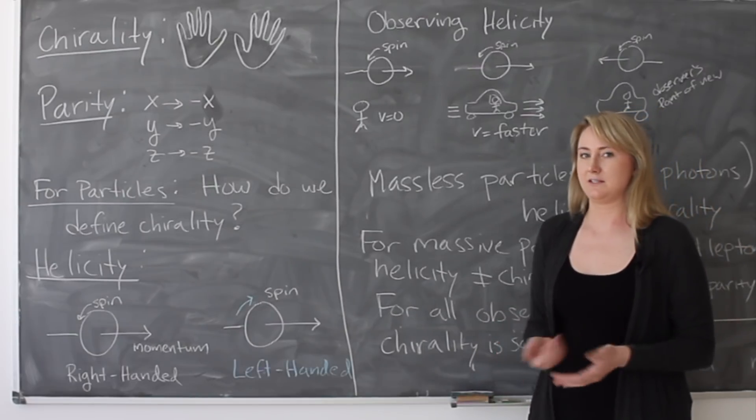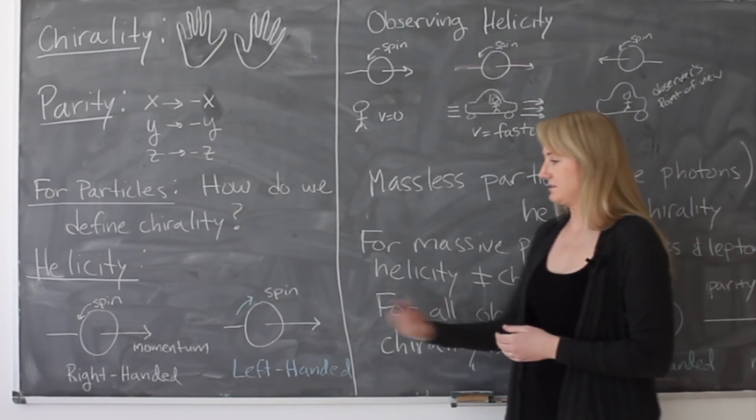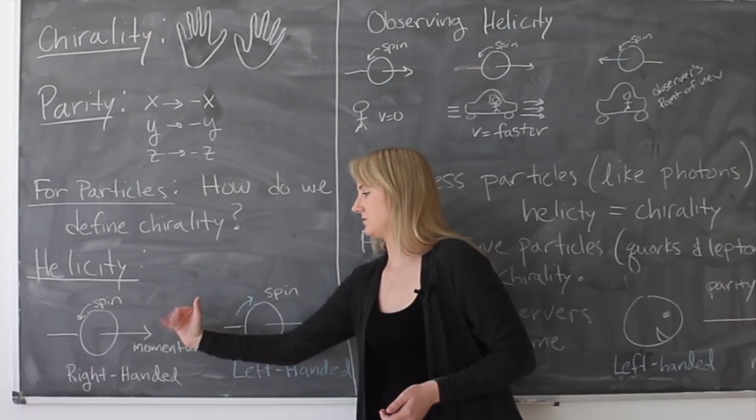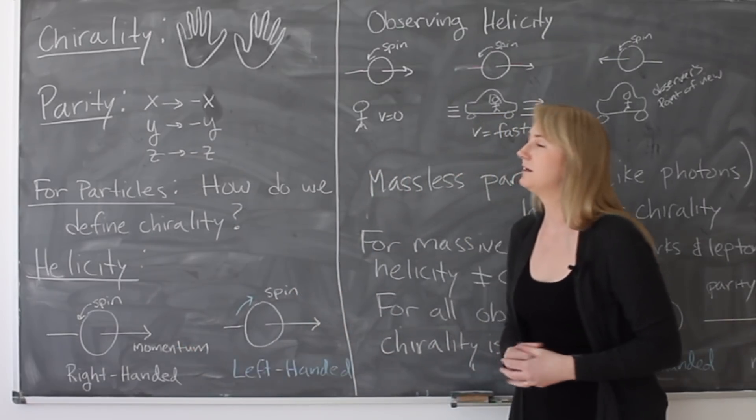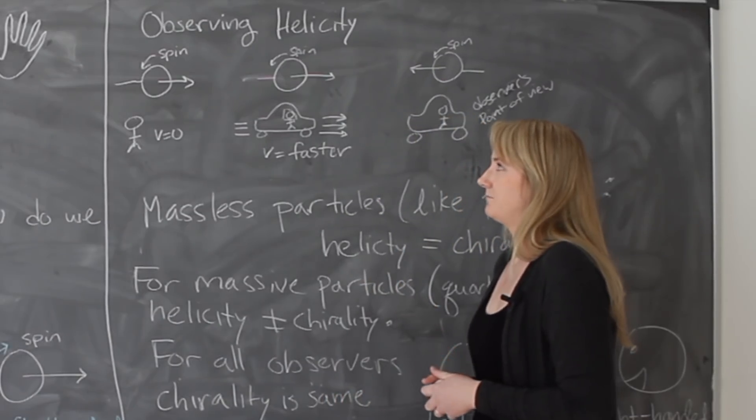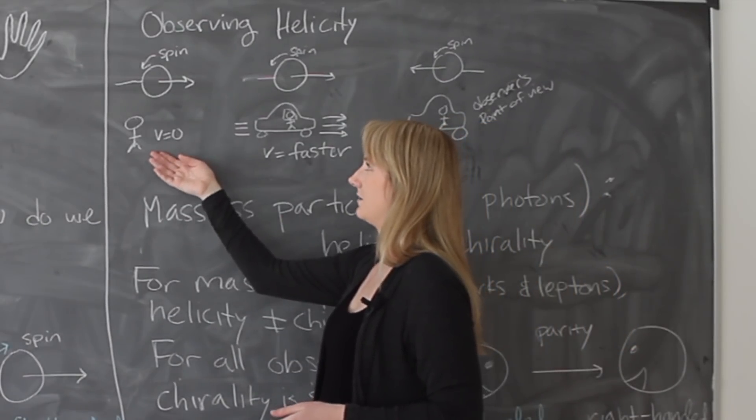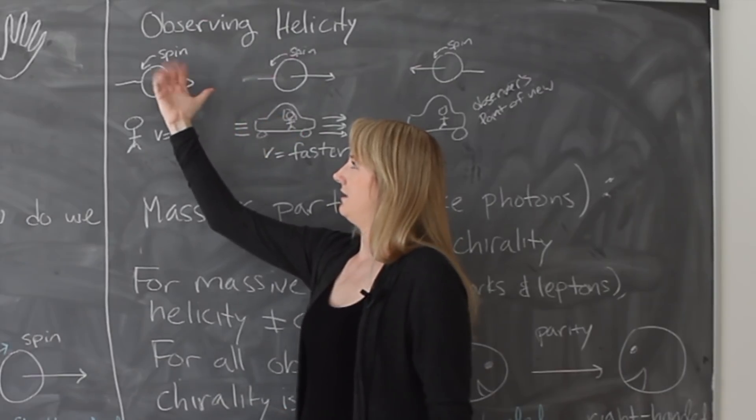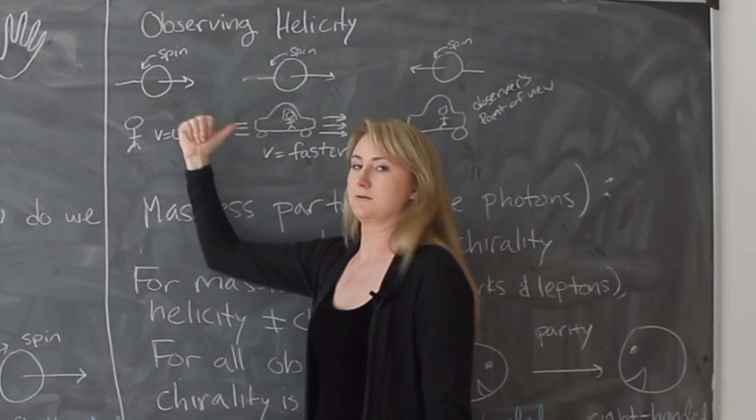So helicity is still not the same as chirality. It's close, right? You can sort of see that this is a right-handed and this is the mirror image, it's the left-handed, but it's not a great definition. For example, for massive particles, if I'm observing a particle and it's moving this way and its spin is this way, this particle looks like a right-handed particle.